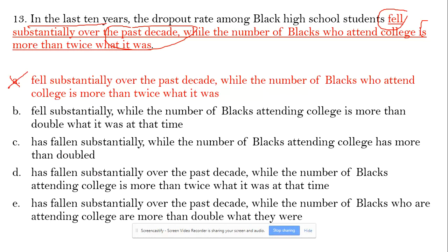The same problem applies here — 'over the past decade' again creates redundancy, so that's out too. E also has a problem, so E is out. That leaves B and C. In C, 'has fallen' and 'has more than doubled' — that's correct parallelism. So C is the best choice.